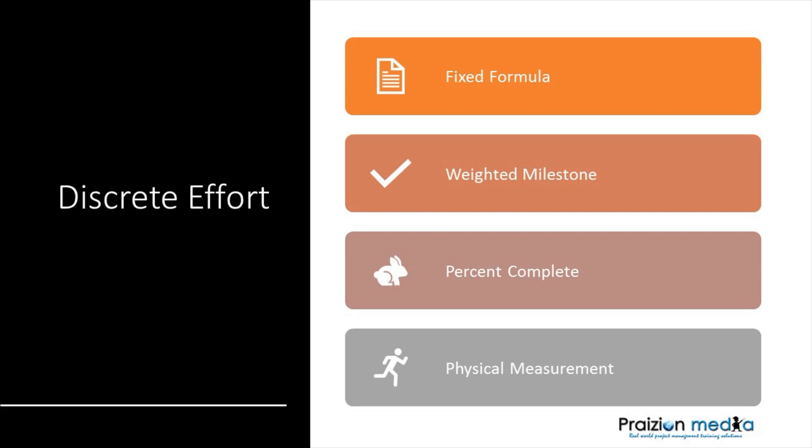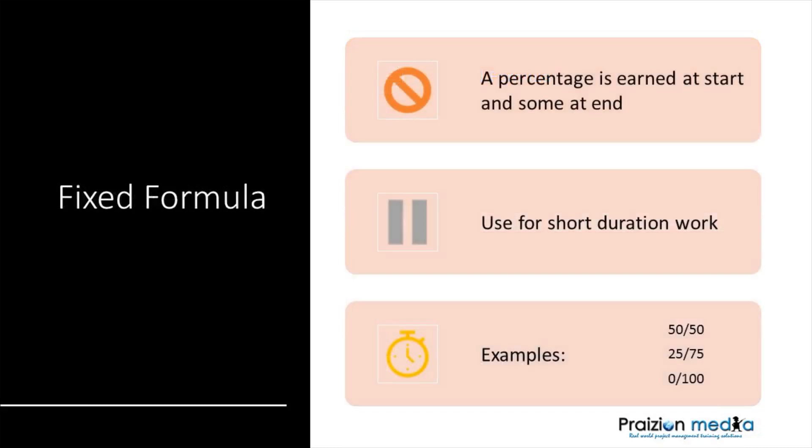Bear in mind that all of these methods have their pros and cons, their pluses and minuses, depending on the project you're working on. Let's talk about using a fixed formula for earned value, because really, that's what it is — measuring progress, measuring percent complete, measuring earned value. Fixed formula pretty much assigns a percentage to the value of work at the start of the milestone and the end of a milestone.